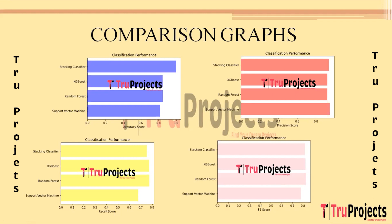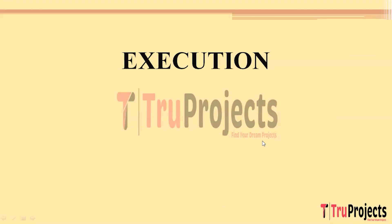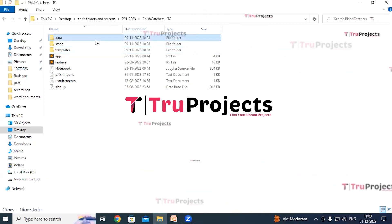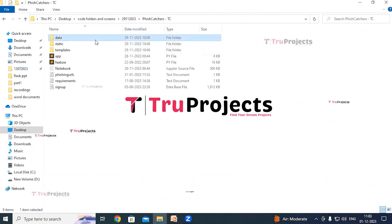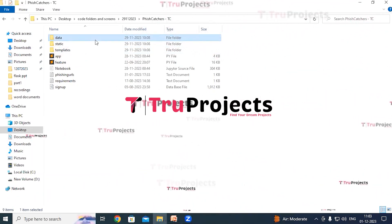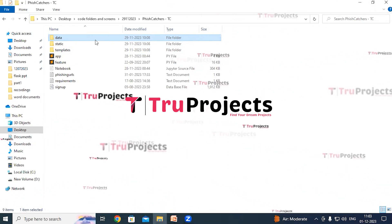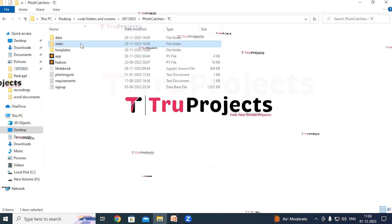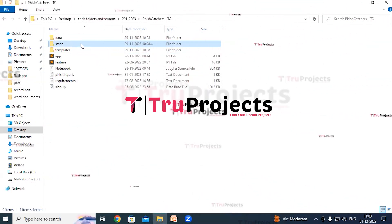To execute this project, first open the code folder containing the project source code files. The data folder contains the phishing dataset with class labels used to train the models. The static folder contains files related to CSS, JavaScript, and Bootstrap.